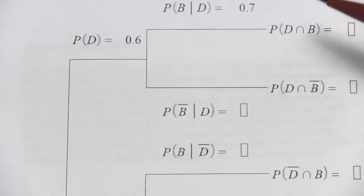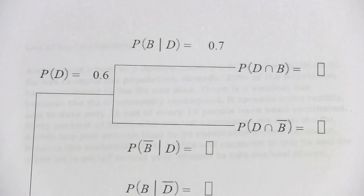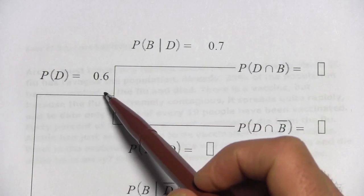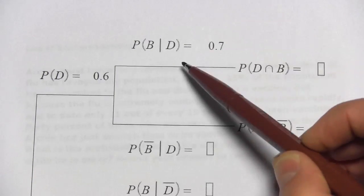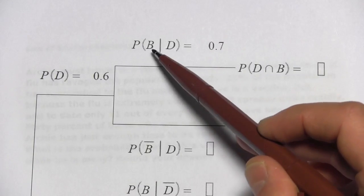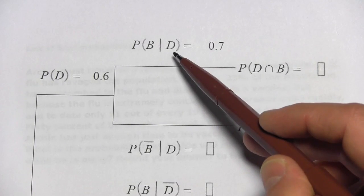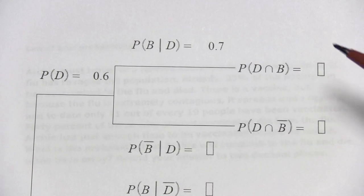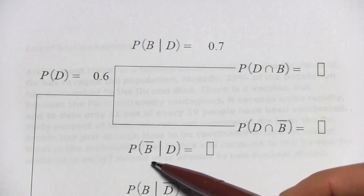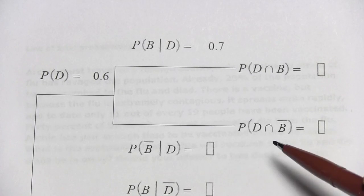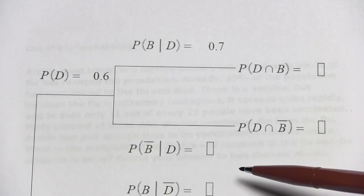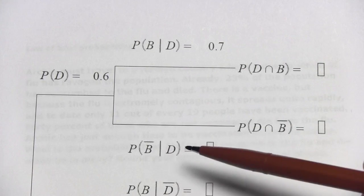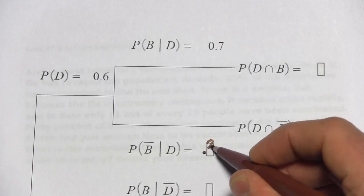We have branches to follow on both the top and bottom. Going along the top first — these are the students who regularly attend the discussion session. The probability of getting a B or better given that they're going to the discussion session is 0.7. Down below, the probability of not getting a B or better given that they're going to the discussion session uses the complement rule again: 1 minus 0.7 equals 0.3.